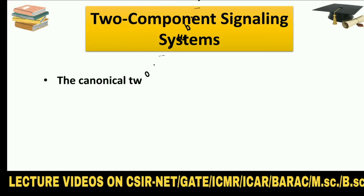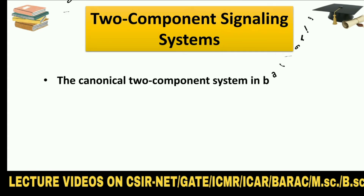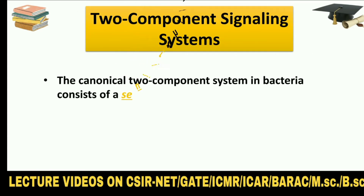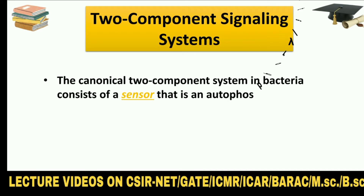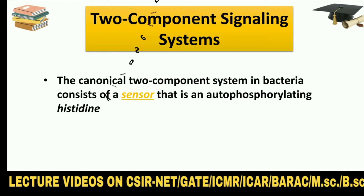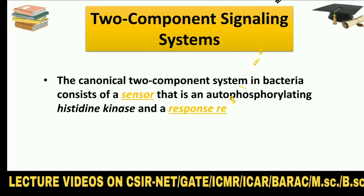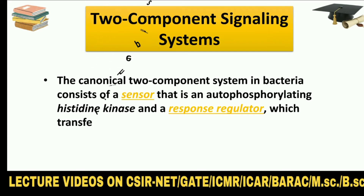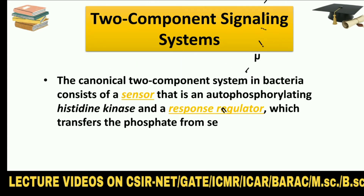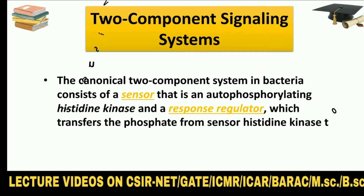The canonical two-component system in bacteria consists of a sensor that is an autophosphorylating histidine kinase and a response regulator, which transfers the phosphate from the sensor histidine kinase to a conserved aspartate within itself.